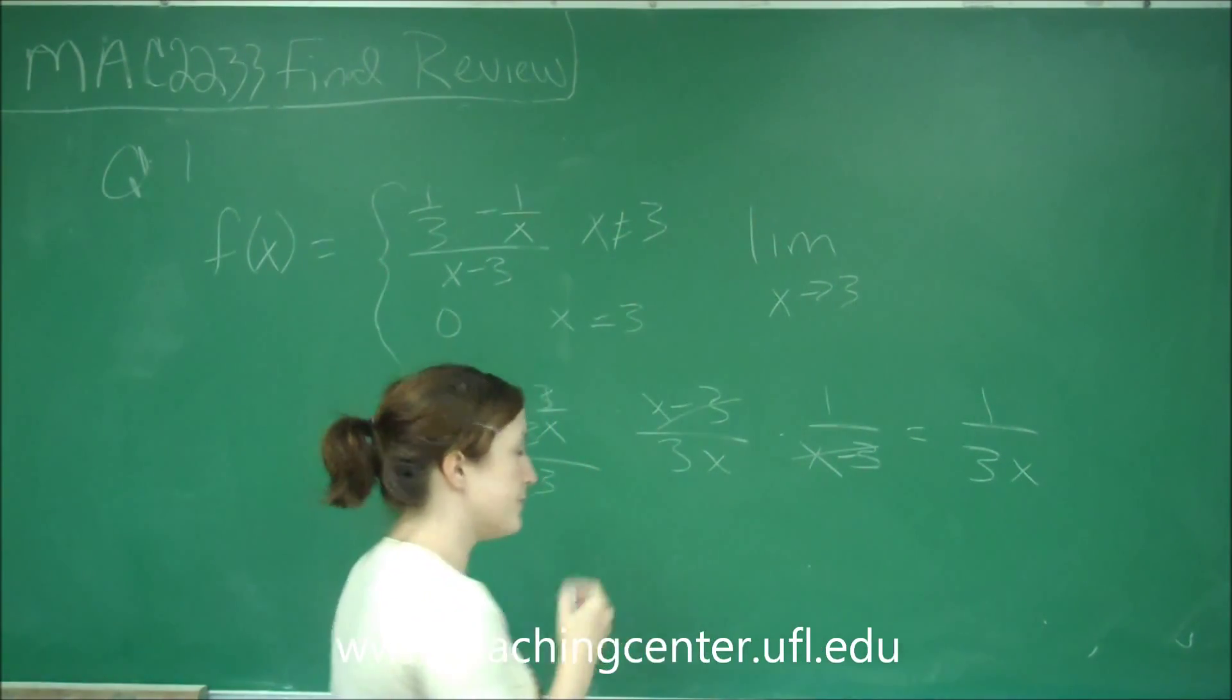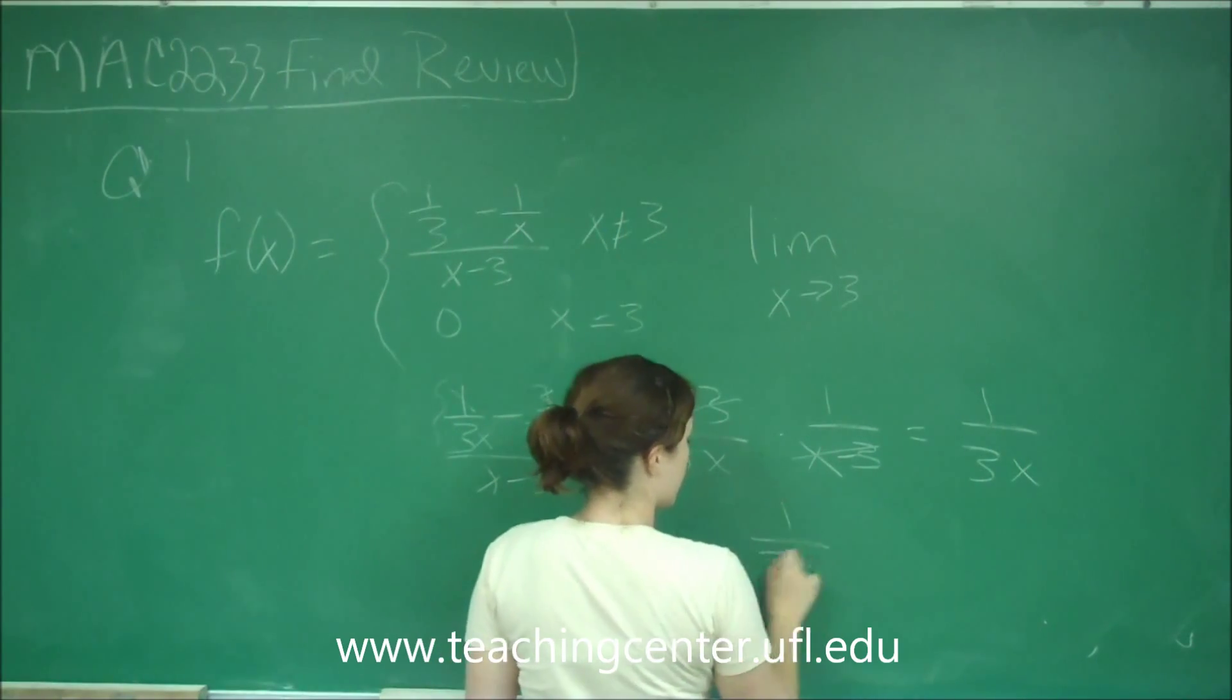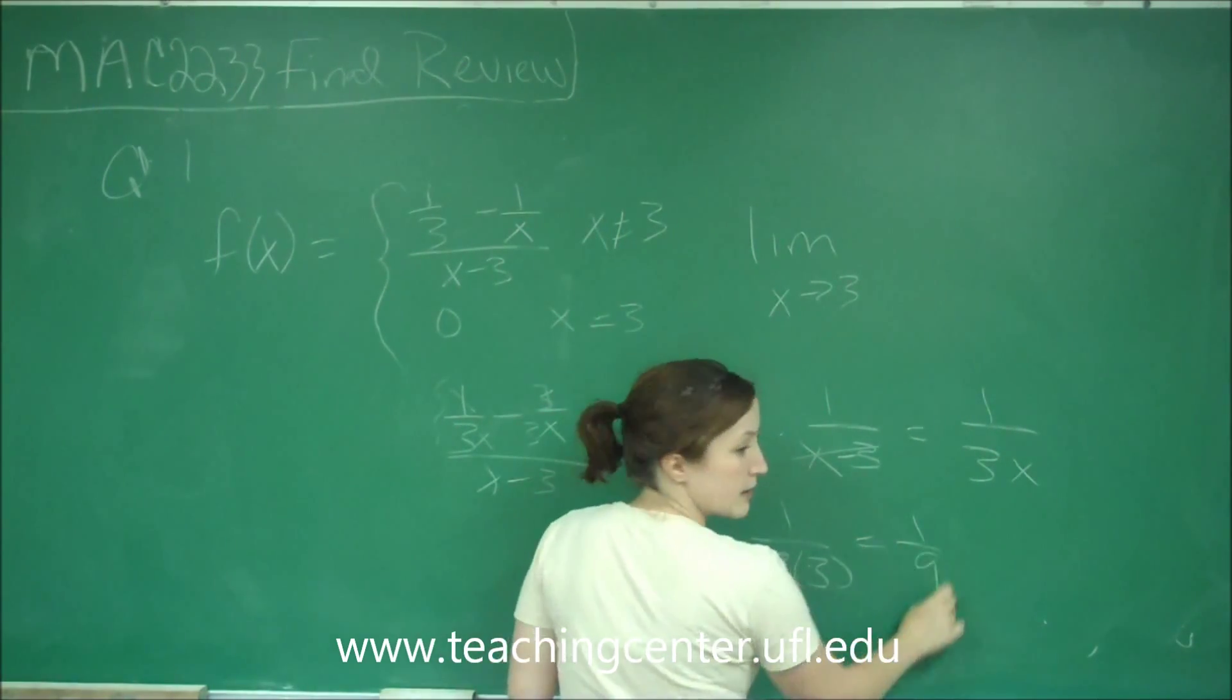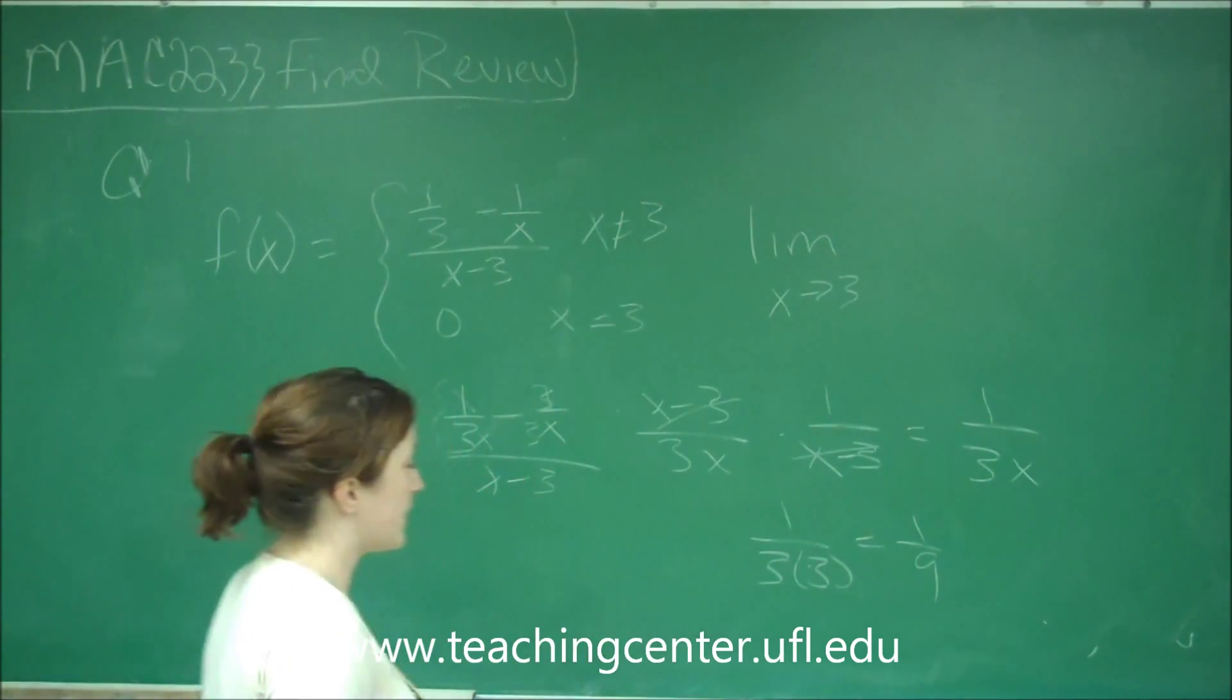And as x is approaching 3, we can just plug that in. It's 1 over 3 times 3, which is equal to 1 ninth. And that is the answer.